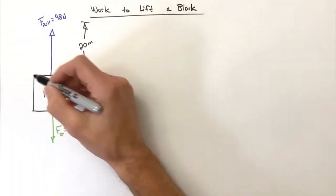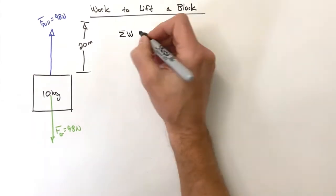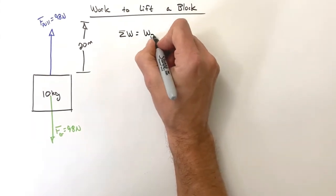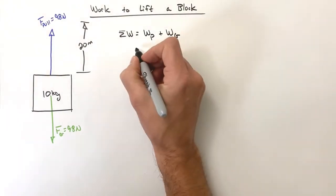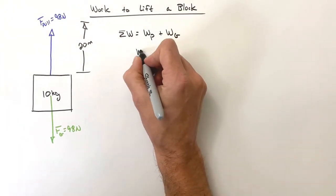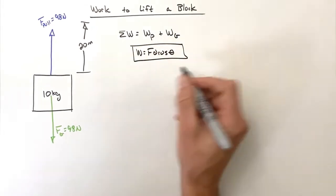So in finding the work done on this block, the sum of all works in this case is simply going to be the work done by the pull force plus the work done by gravity. And as always, our equation for work is F d cosine theta.